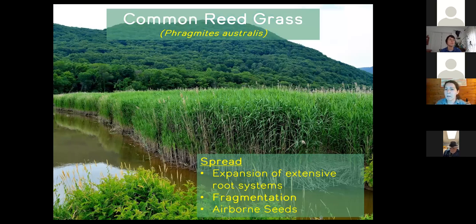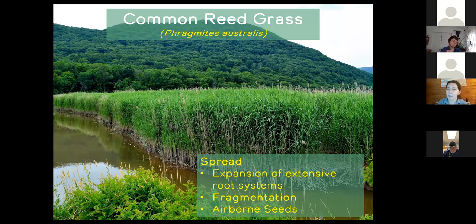Common reedgrass spreads through the expansion of an extensive underground root system — it sends out roots and new shoots can emerge from them, similar to weeding a garden and having plants pop up down the row. It also spreads by fragmentation: as Zach mentioned, a section as small as an inch can form a new plant. So if you're mowing a plant that's 12 feet tall, that's a lot of propagules you can create via fragmentation. It can also reproduce via airborne seeds.